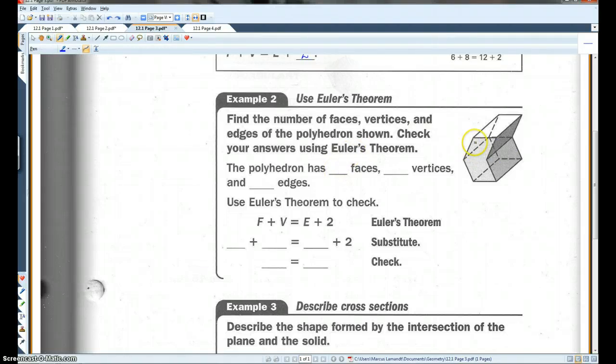The polyhedron has one, two, three, four, five, six, seven, eight, nine faces. It has one, two, three, four, five, six, seven, eight, nine, ten, eleven, twelve vertices.